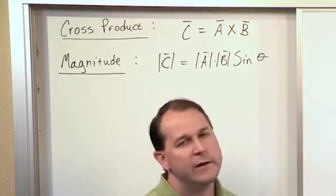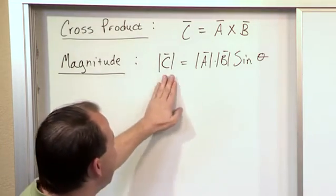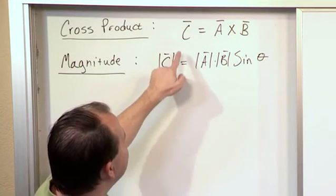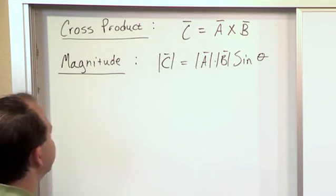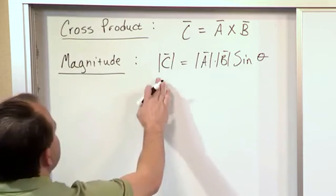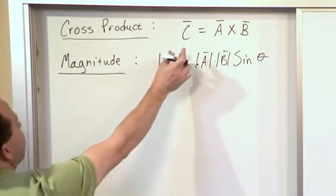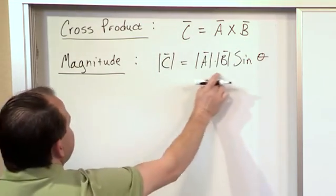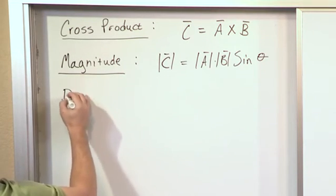When you do this calculation in terms of a cross product, what you're getting back is the magnitude of the vector that's the cross of those two. The magnitude of this vector is given by this calculation, but since it's a vector it also has a direction.